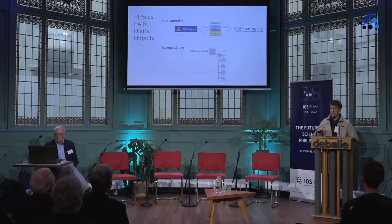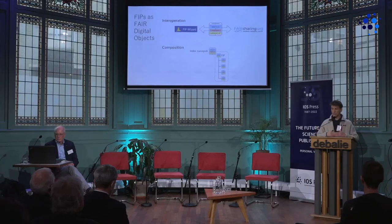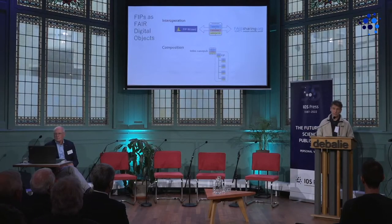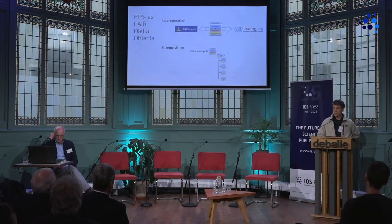The second example is composition — that we have these atomic-level nanopublications for FAIR enabling resources. When they are arranged into a list, we would call that a FAIR implementation profile. That list can also be represented as a nanopublication, as an indexed nanopublication. So it's an example of where one level of nanopublication can be used to compose a higher-level nanopublication. So we're starting to get closer to what we would call FAIR digital objects in this case.